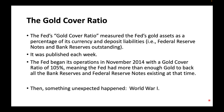The Fed's gold cover ratio measured the Fed's gold assets as a percentage of its currency and deposit liabilities — in other words, relative to Federal Reserve notes and bank reserves outstanding. This ratio was published each week. The Fed began its operations in November 1914 with a gold cover ratio of 105 percent, meaning the Fed had more than enough gold to back all the bank reserves and Federal Reserve notes existing at that time.